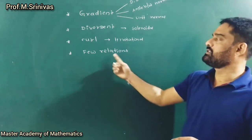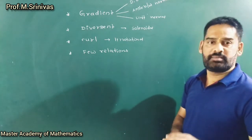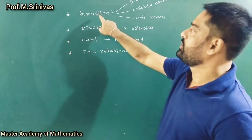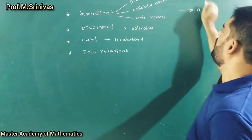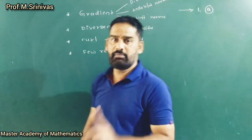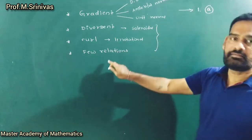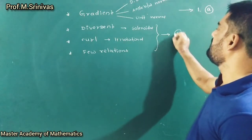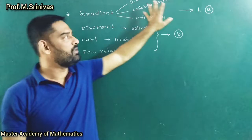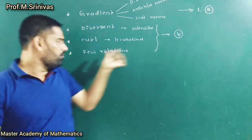The last topic is some relations between gradient, divergence, and curl. From an examination point of view, from the fourth and fifth units you expect only one problem each, divided into an 'a' bit and a 'b' bit. From the gradient, you are definitely expecting one bit — specifically the 'a' bit — guaranteed in the final semester examination. From the remaining topics — divergence, curl, and relations — you are expecting the 'b' bit.